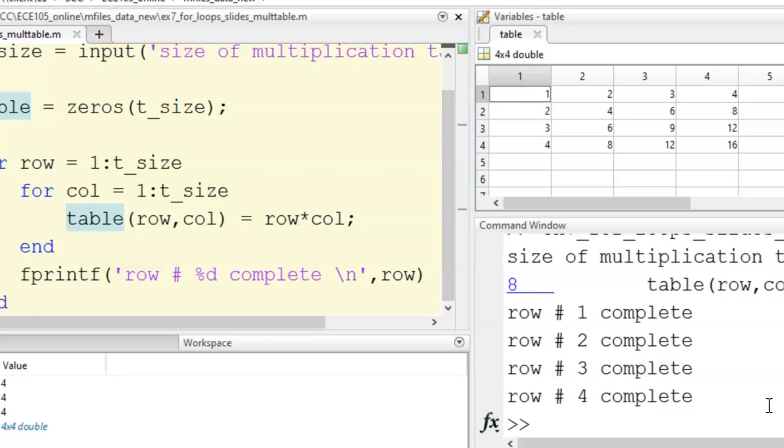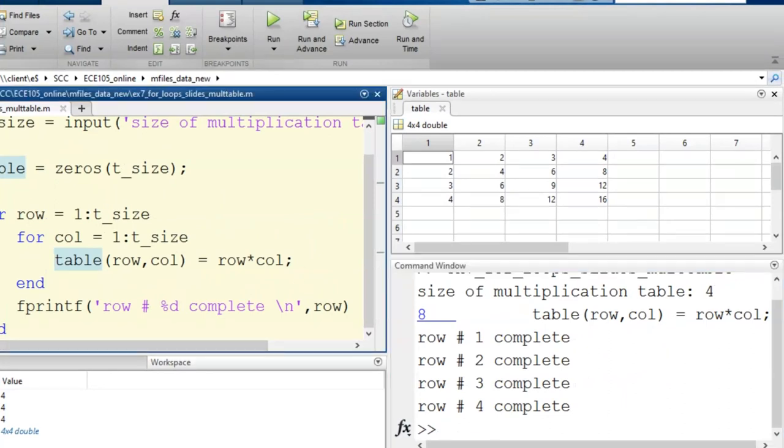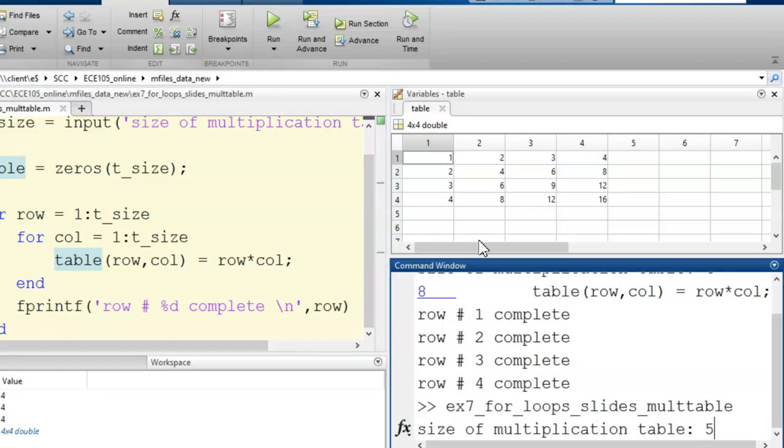The beauty of this method is that it can be expanded to any size of multiplication table. I chose 4x4 to keep it small for explaining, but I could easily do a 50x50 matrix just by requesting that size when prompted.